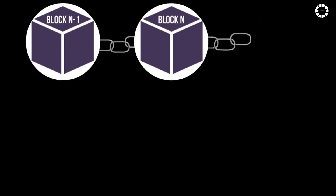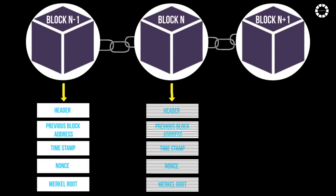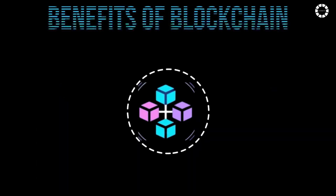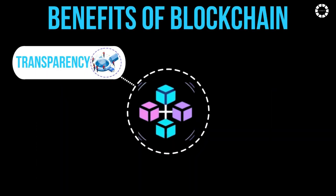Each block in the chain contains a cryptographic hash of the previous block, time-stamped transaction data, and a unique identifier, creating a chronological and tamper-proof record of the transactions.